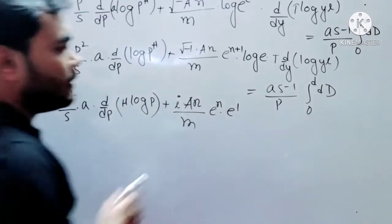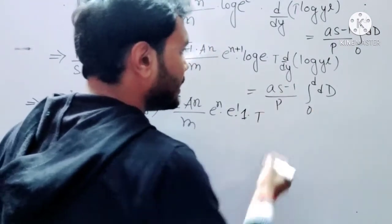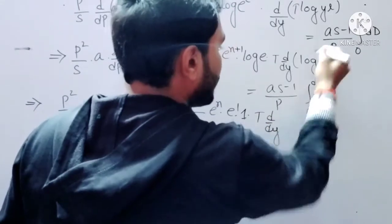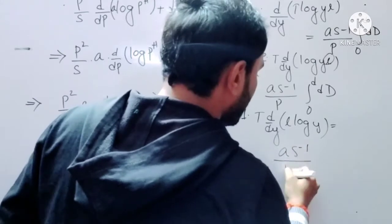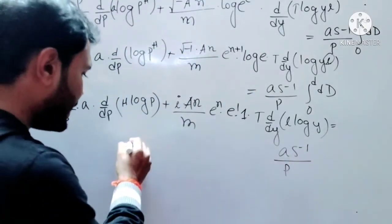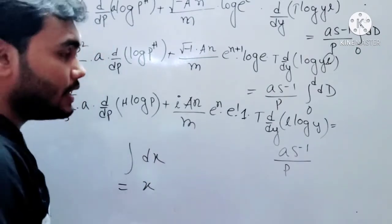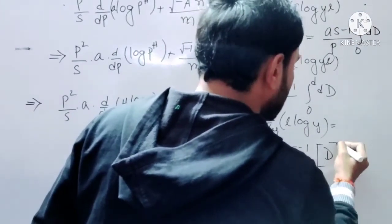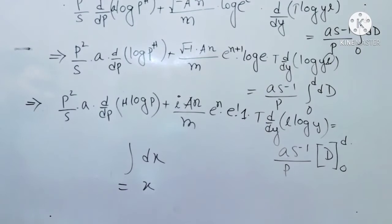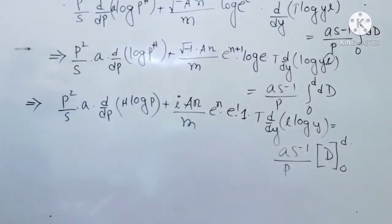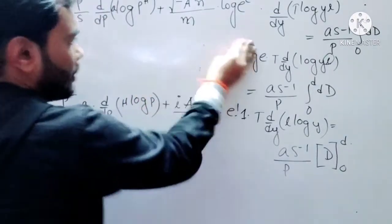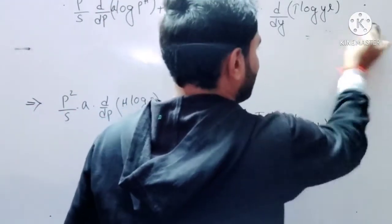So we are getting 1, then p is left as it was, then d/dy. For the same log-power rule, l comes in front of log, and we get log y. On the right-hand side, inside the integral we are integrating d(d), which gives us just d, and since it is a definite integral we put the limits 0 to b, giving d minus 0.